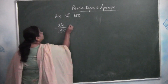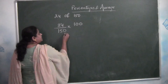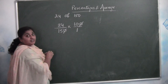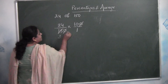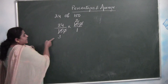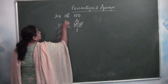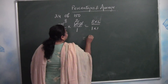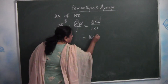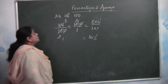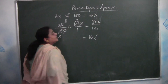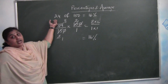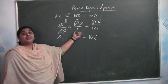So 24 by 150 into 100. Do the cancellations: cancel 10 and 10; 15 and 10 cancel with the 5 table (5 threes are 15, 5 twos are 10); then 3 and 24 cancel (3 eights are 24). Left over: 8 into 2 by 1 into 1 = 16. Since we multiplied with 100 and are expressing as a percentage, 24 of 150 is 16 percent.